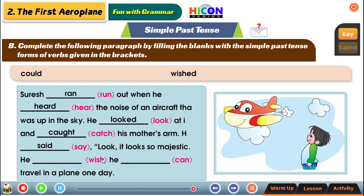He wished he could travel in a plane one day. The past tense of 'can' is 'could'. So we have now filled all the blanks. Reading the complete passage: Suresh ran out when he heard the noise of an aircraft that was up in the sky. He looked at it and caught his mother's arm. He said, 'Look, it looks so majestic.' He wished he could travel in a plane one day.